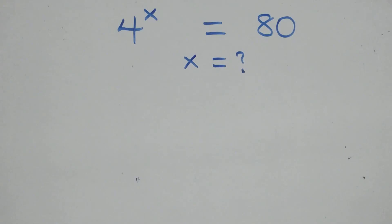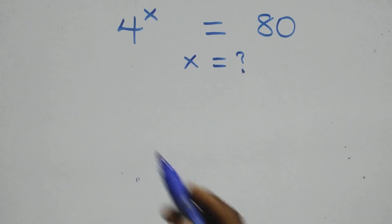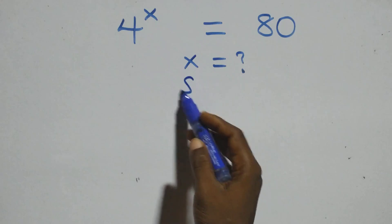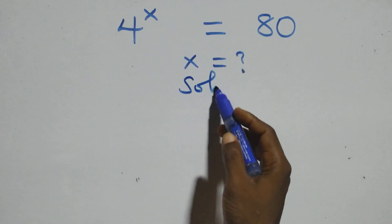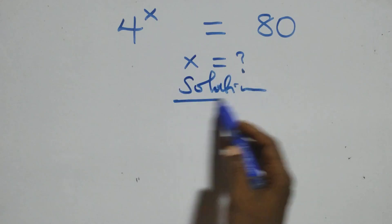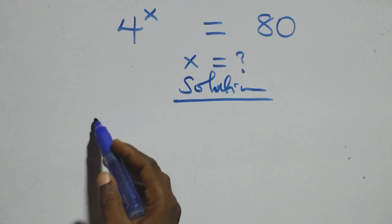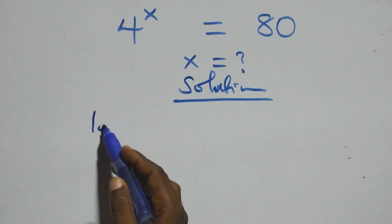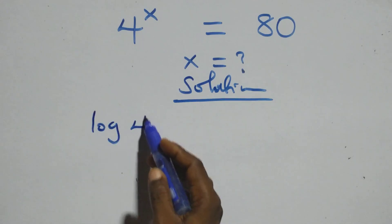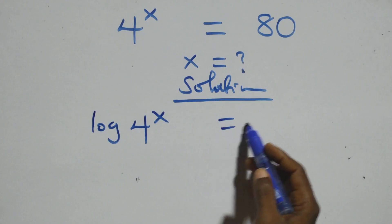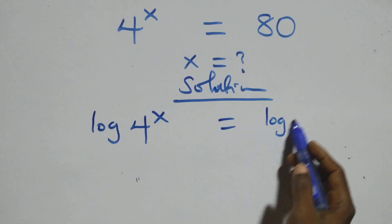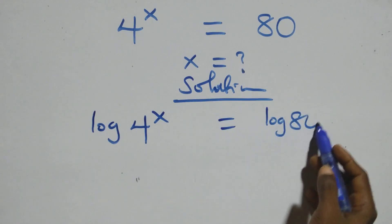Hello, you're welcome. How to solve this nice exponential equation. What we have here, we take the log on both sides. We have log 4 raised to the power x equals to log 80.